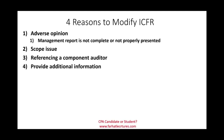The four reasons are: first, adverse opinion — and under adverse opinion I have a sub-reason called management report is not complete or not properly presented. Some CPA review courses treat this as a separate topic, but I believe they are connected. Second, you might have a scope issue — meaning you could not do the work. Third, referencing a component auditor — someone else is working on the engagement. Fourth, to provide additional information. I'm going to go over this list step by step.